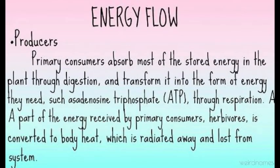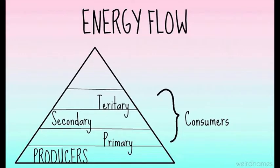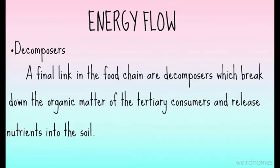Primary consumers absorb most of the stored energy in the plant through digestion and transform it into the form of energy they need, such as adenosine triphosphate or ATP, through respiration. Part of the energy received by primary consumers or herbivores is converted to body heat, which is radiated away and lost from the system. This is the pyramid example of consumers — tertiary, secondary, and primary. A final link in the food chain are the decomposers, which break down the organic matter of the tertiary consumers and release nutrients.